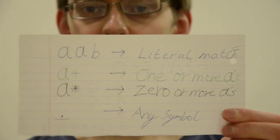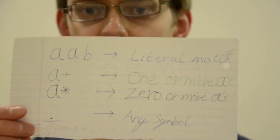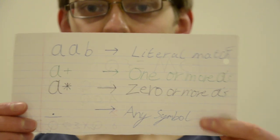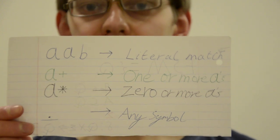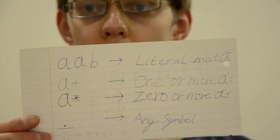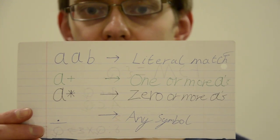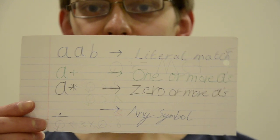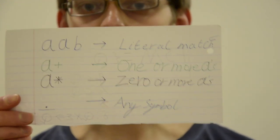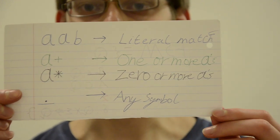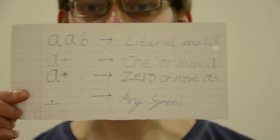And then we start to get some ambiguity and some possibility for recursion with the plus postfix symbol which we are interpreting as meaning one or more repetitions of the symbol preceding it. And the star which is zero or more and then just the dot which will be any symbol except it.